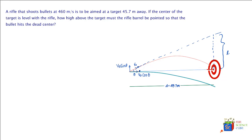Let's make our first equation in the horizontal direction. The displacement in the horizontal direction is 45.7 meters, and the velocity is V naught cos theta, which remains constant throughout the travel time of the bullet. So we have the simple equation: displacement equals velocity into time. That gives us displacement equals V naught cos theta times the time of travel of the bullet. Let's call this Equation 1.